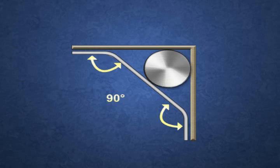The procedure to lay out and fabricate a compound 90-degree bend is as follows.